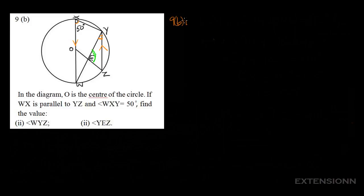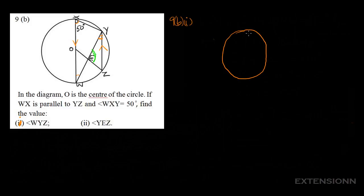Now let's find angle WYZ. We have 50 degrees at WXY. To find another angle, remember from circle geometry: if you have a circle with a diameter, and a triangle inside the circle touching the diameter, the angle at the circumference is always 90 degrees.